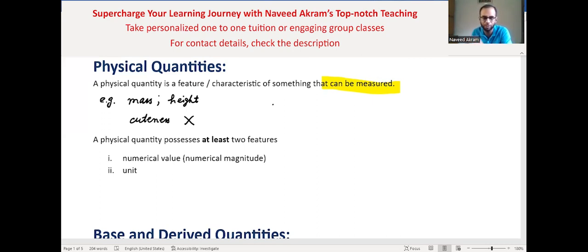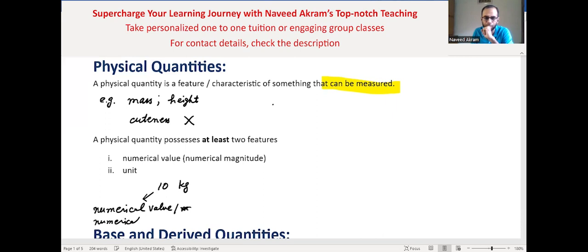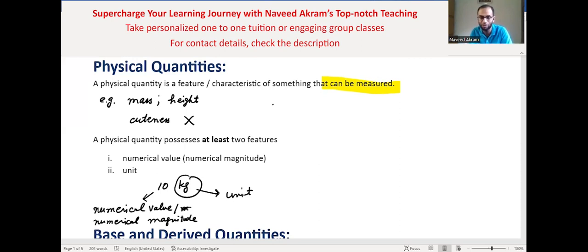The two required features of a physical quantity are: number one, numerical value — also known as numerical magnitude — and number two, unit. For example, take '10 kilograms': here '10' is the numerical value or numerical magnitude, whereas 'kilogram' is the unit. This means complete specification, because only '10' doesn't mean anything — the unit must be there. Without a unit, saying only '10' doesn't make any sense.